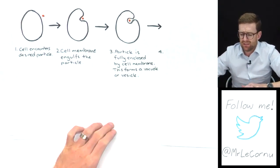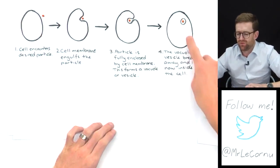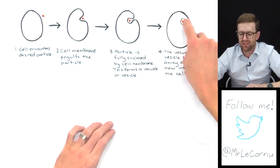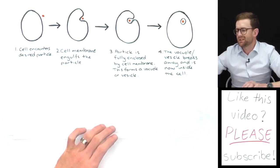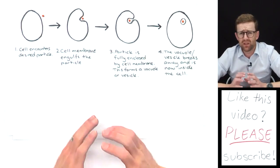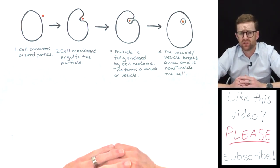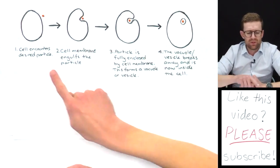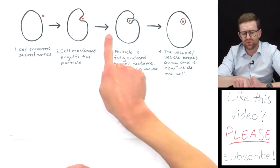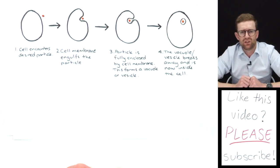So then finally it actually breaks away. The vacuole or vesicle breaks away and it's now completely inside of the cell. And then there are different ways that the cell can access those materials depending on the type of endocytosis process that this is. But if you're drawing a diagram of endocytosis, they are your simple representations that you can use to show the way that it's happening.